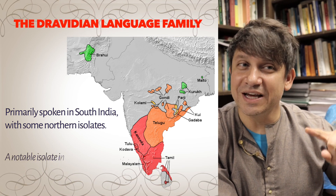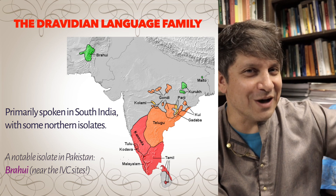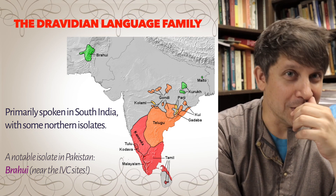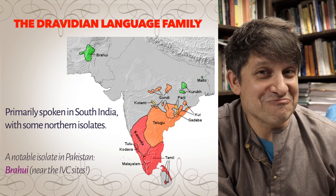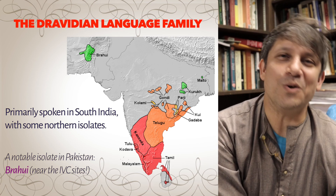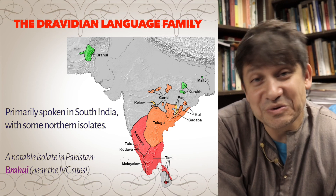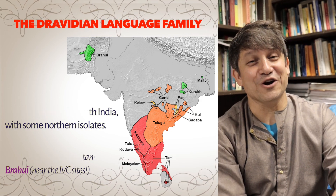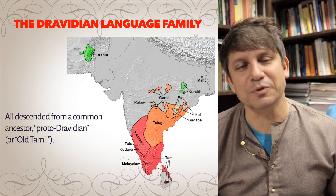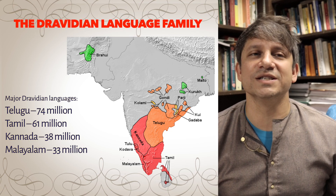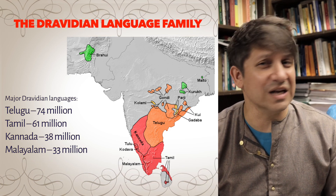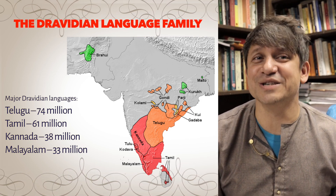The second major family is the Dravidian family, mostly spoken in southern India, with one outlier — Brahui — found all the way in Baluchistan, Pakistan. Brahui is spoken by herding communities in the area of the old Indus Valley sites, which has led to speculation that it's a survival of that very old Indus Valley culture. All Dravidian languages descended from a single common ancestor called Proto-Dravidian, sometimes called Old Tamil. All four of the big Dravidian languages have developed rich literary traditions, including some unbelievable ancient poetry and dance drama.